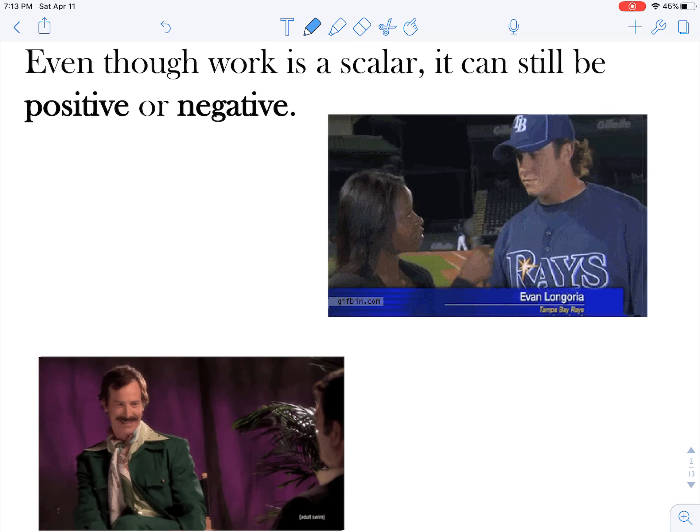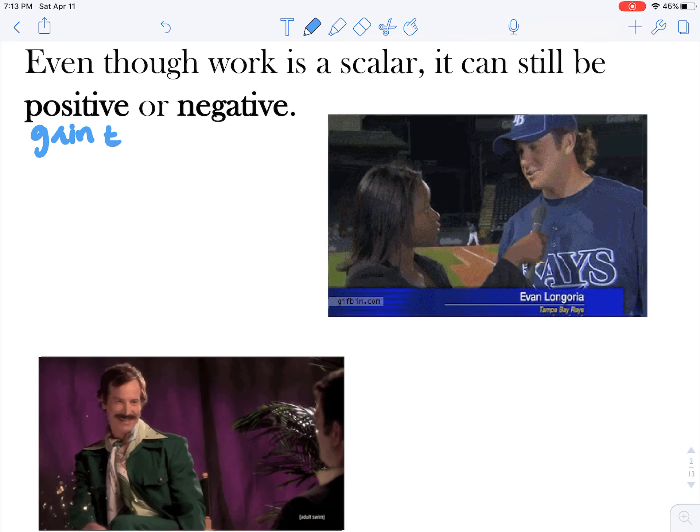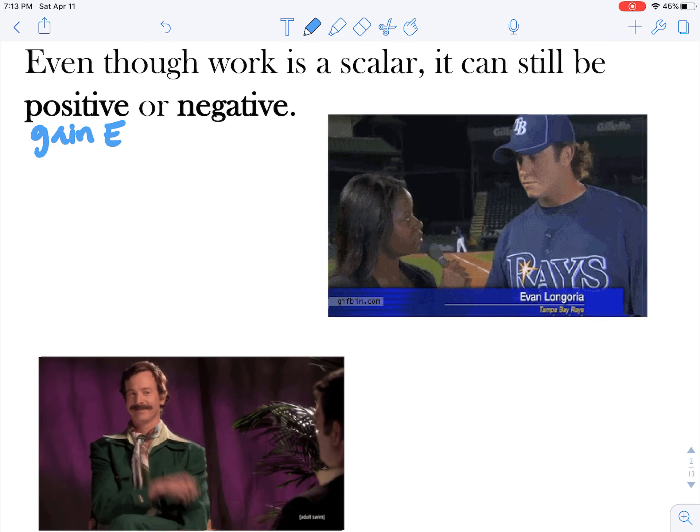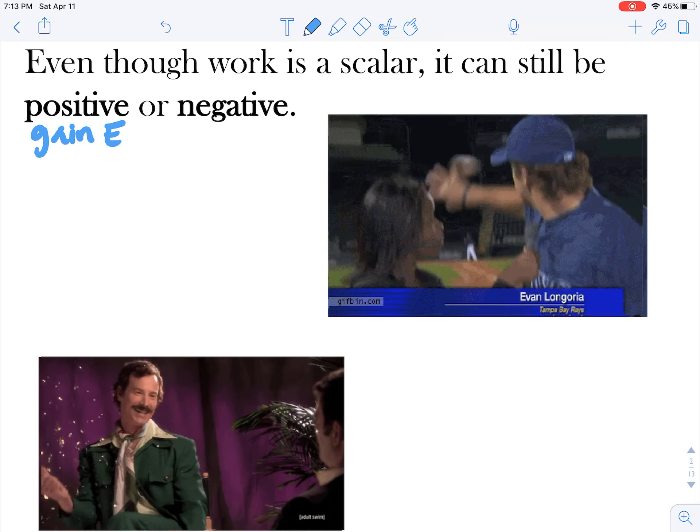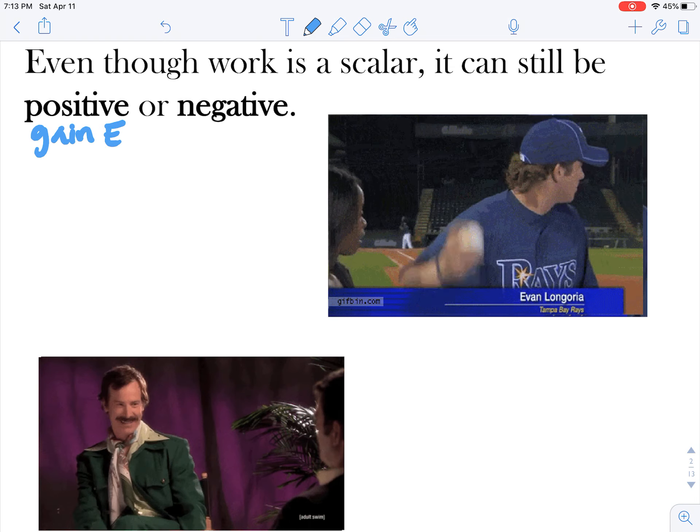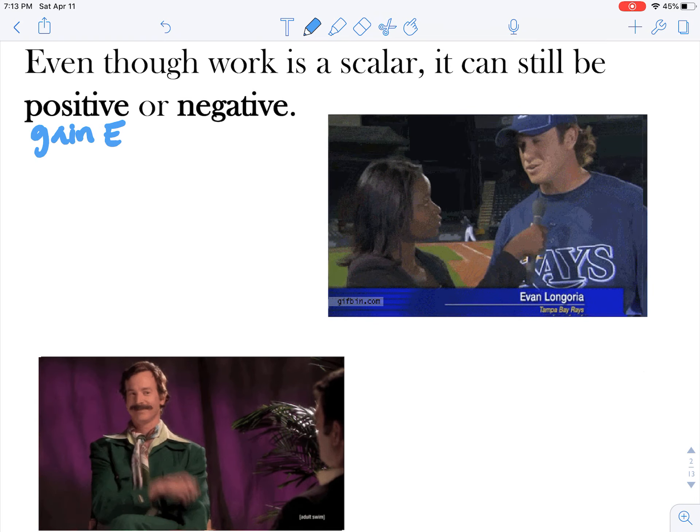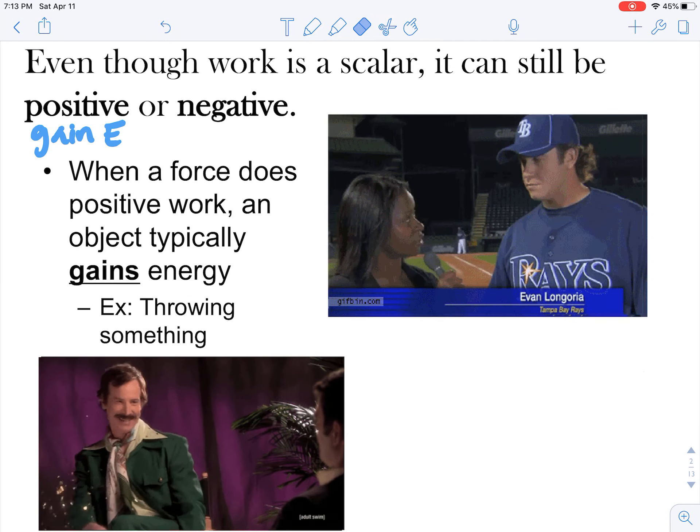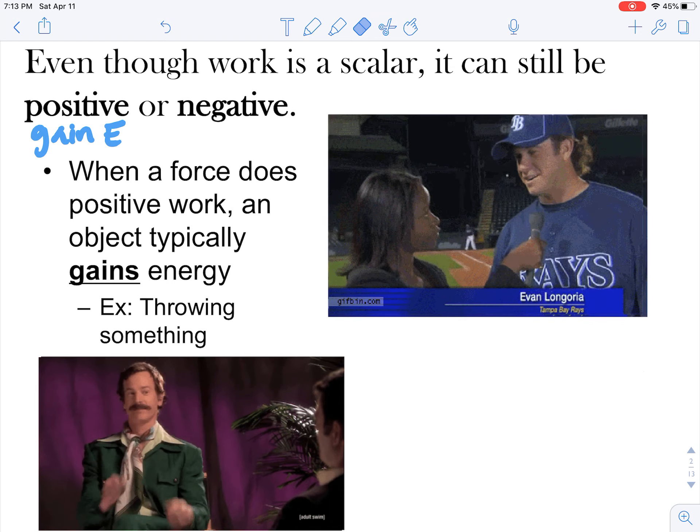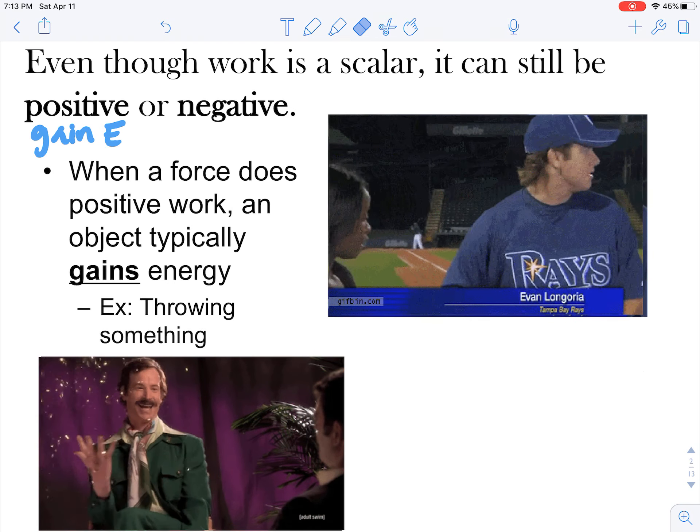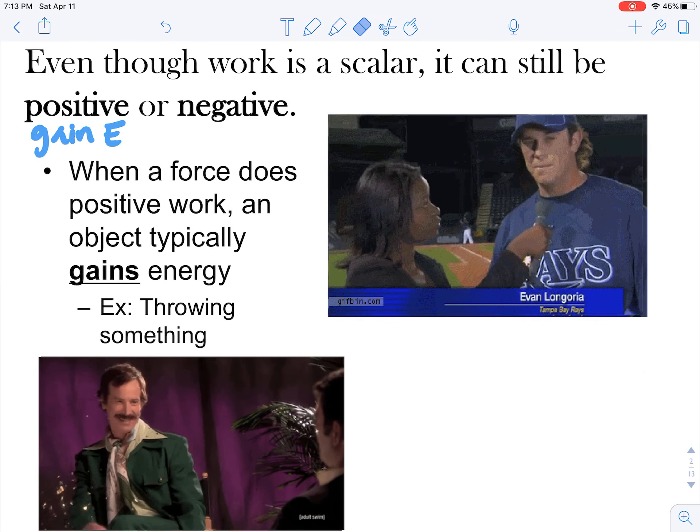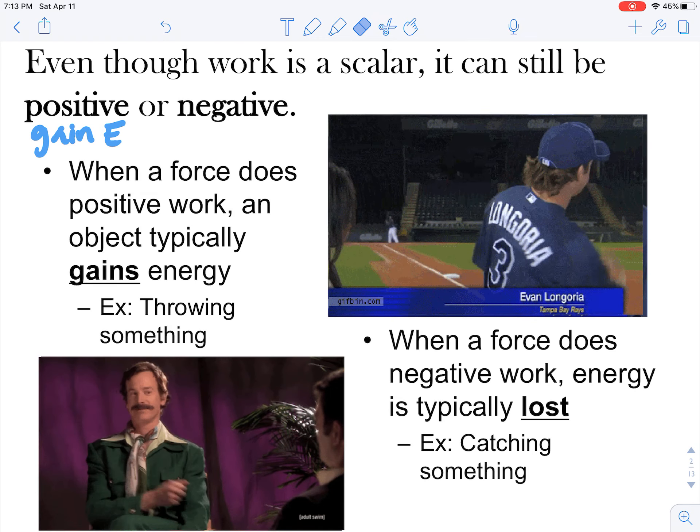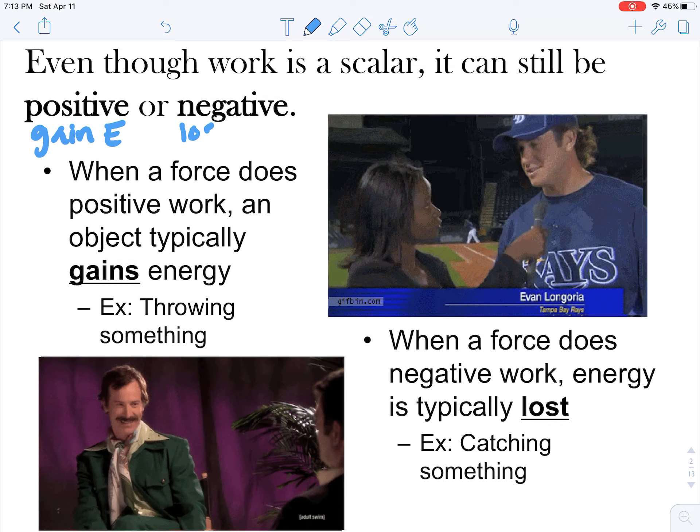So positive work, I'm going to give you a heads up, typically whenever you experience positive work there will be a gain in some sort of energy. The force out of these two that's causing a gain in energy would be this picture of the guy throwing the confetti. This would be an example of positive work because he's applying a force to confetti causing it to gain energy, it's gaining kinetic energy, it's moving. Whereas Evan Longoria, this video of Evan Longoria supposedly catching this ball headed straight for them barehanded would be an example of negative work. He is causing that ball to stop, he is causing it to lose energy. So that would be considered negative work, this would be a loss of energy.